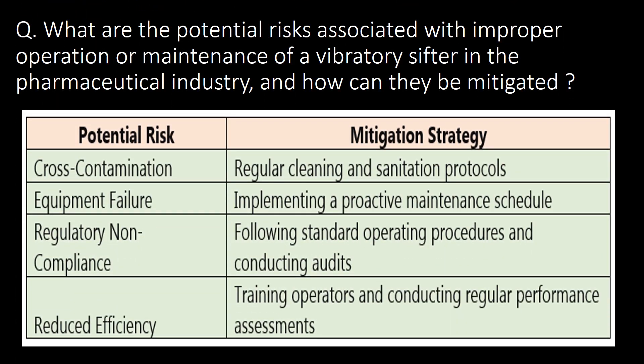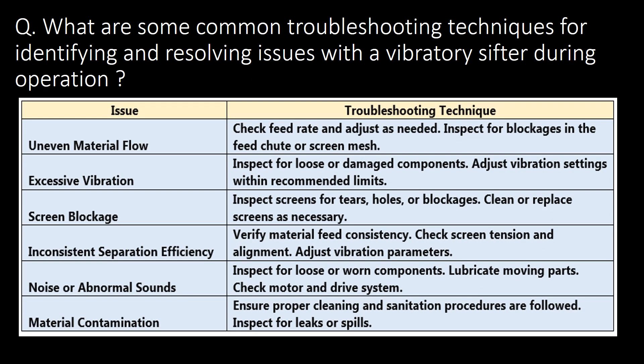What are the potential risks associated with improper operation or maintenance of a vibratory shifter in the pharma industry, and how can they be mitigated? The major potential risks are cross-contamination, equipment failure, regulatory non-compliance, and reduced efficiency. Refer to the table below for potential risks and their mitigation strategies.